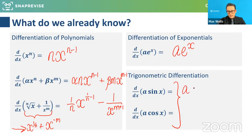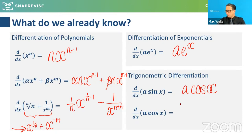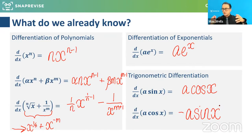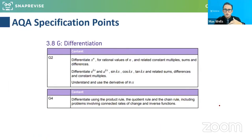It's also worth knowing some exponential and trigonometric differentiation, covered in Year 12. Sine differentiates to cosine, so a·sin(x) becomes a·cos(x). Cosine differentiates to minus sine — that's the sneaky one where the negative factor comes in. Any constant a multiplies through. These are the key things we're going to need for the chain rule.